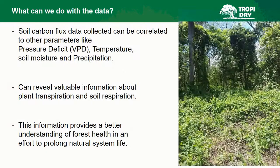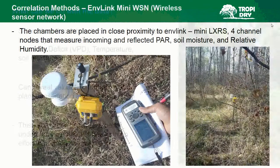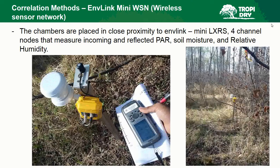So what can we do with this data? The soil carbon flux data collected can be correlated to other parameters like vapor pressure deficit (VPD), temperature, soil moisture, and precipitation. All of this can reveal valuable information about transpiration and soil respiration, providing a better understanding of forest health in an effort to prolong natural system life. One of the correlation methods uses the NVLink Mini WSN wireless sensor network. We have Mini-LXRS wireless nodes scattered throughout the National Park — four-channel nodes that measure incoming and reflected PAR (photosynthetically active radiation), soil moisture, and relative humidity. The chambers are placed in close proximity to these nodes to get more data to correlate with.